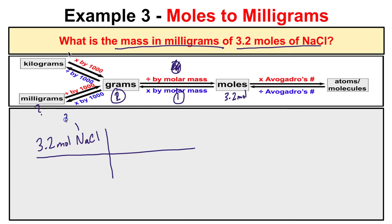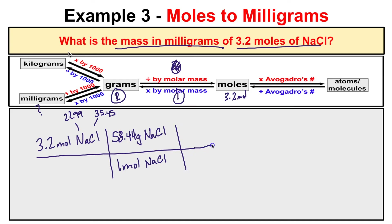From the periodic table, the molar mass of Na is 22.99 and chlorine is 35.45. Adding these together gives a molar mass of 58.44 for NaCl. We know there are 58.44 grams of NaCl for every mole of NaCl — that's our first step. In our second step, we need to convert these grams to milligrams, and we know that there are 1,000 milligrams in one gram.